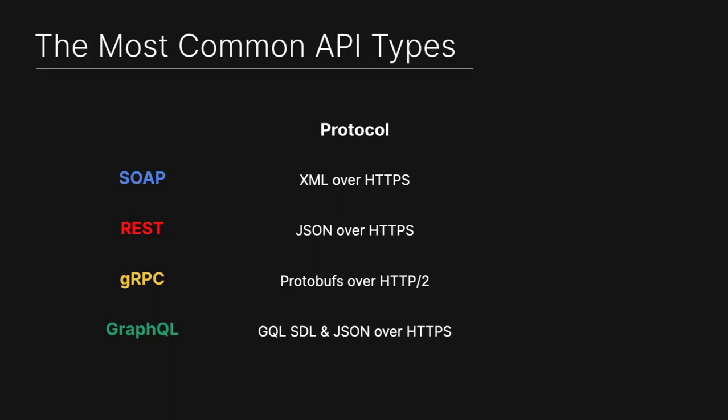Last but not least, there's GraphQL. From a protocol basis, it's a little bit of a hybrid. It has a GraphQL schema definition language, which is really its own proprietary format — very JSON-esque — and then responses come back in JSON, served over HTTPS. We support GraphQL today with some limitations, and we do have customers using GraphQL in production today, protecting it with the Cloud WAF.